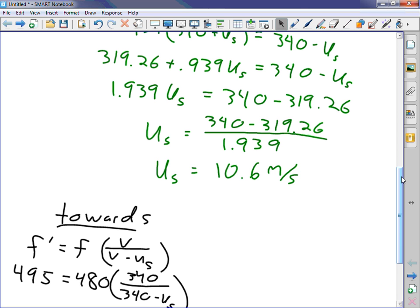495 equals 480 times 340 over 340 minus u sub s. Plug-chug. If you think physics-wise, this problem actually becomes easy. Instead of doing all that stuff in green, you just know the frequency has to be 480, and then you plug-chug. I looked at the two frequencies. I can assume that the Doppler shift is exactly the same going towards and away.